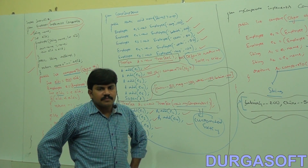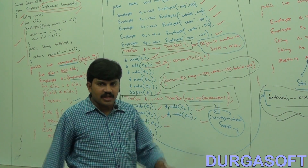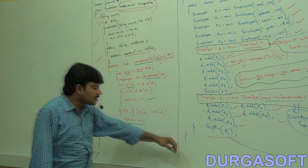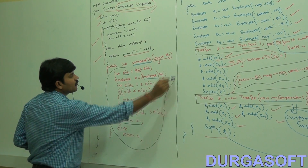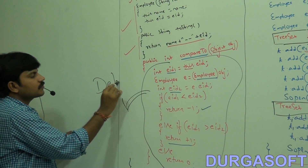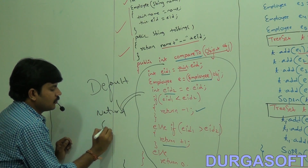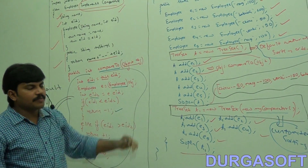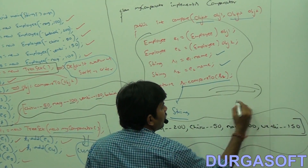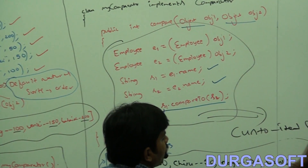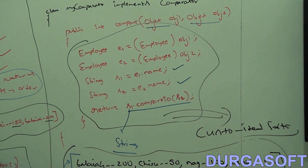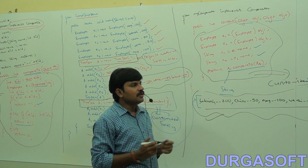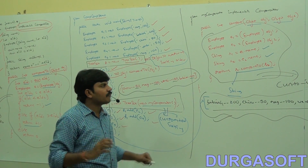Suppose your default natural sorting is based on name and ID-based is your customized sorting — no problem at all. Whatever logic you write inside the compareTo method is for default natural sorting order. Whatever logic you write inside the compare method is for customized sorting. Based on your requirement — whether by ID, name, salary, or age — you can define any sorting you need using Comparator.